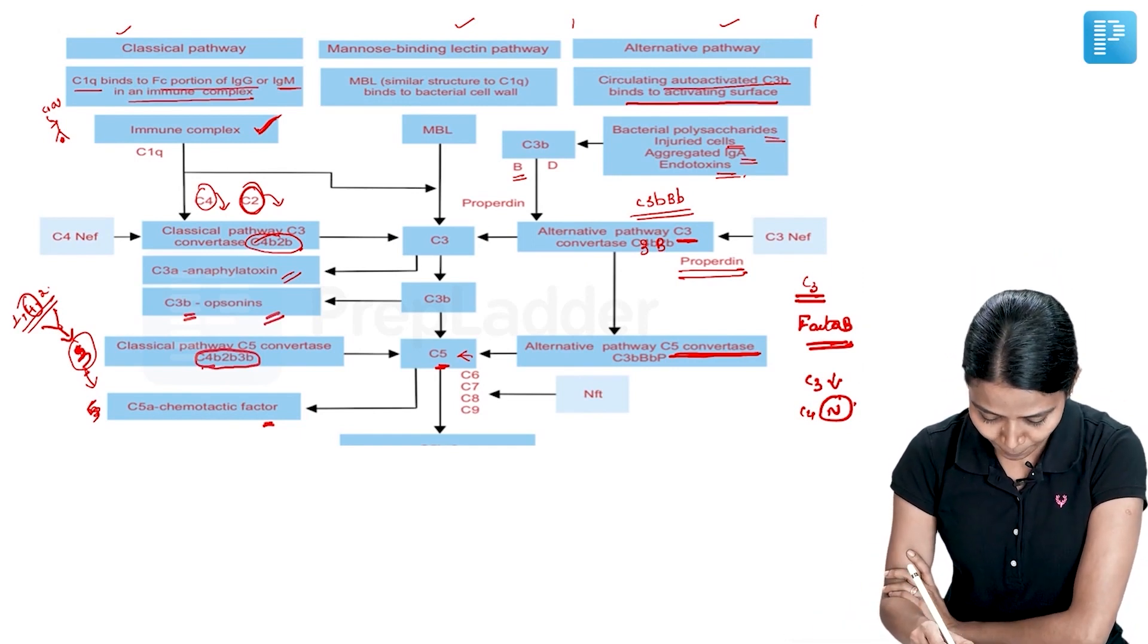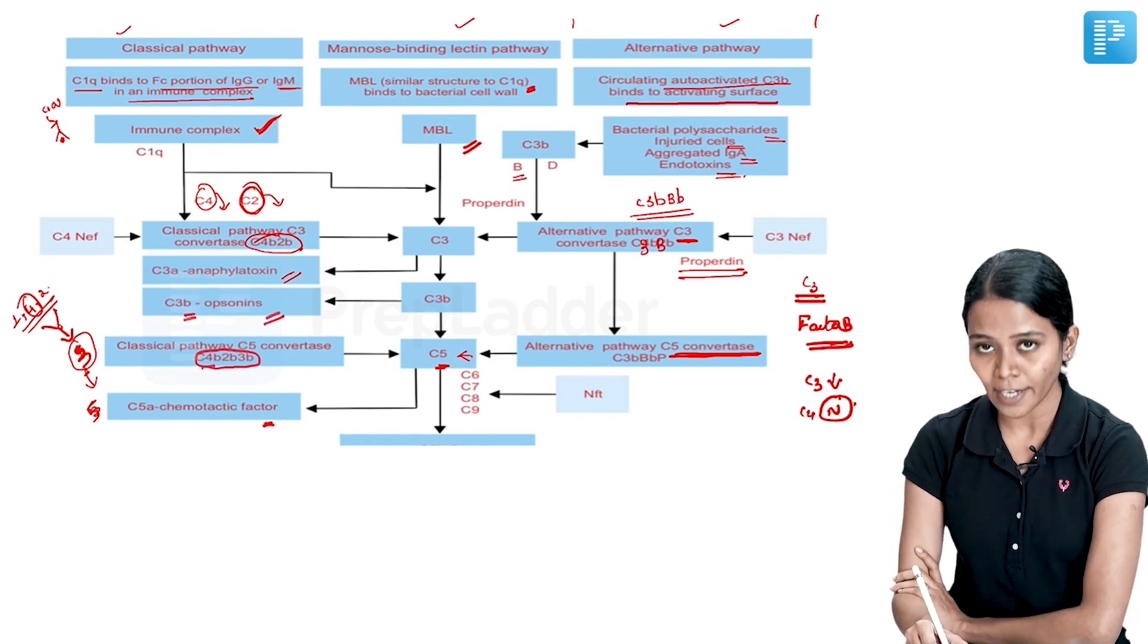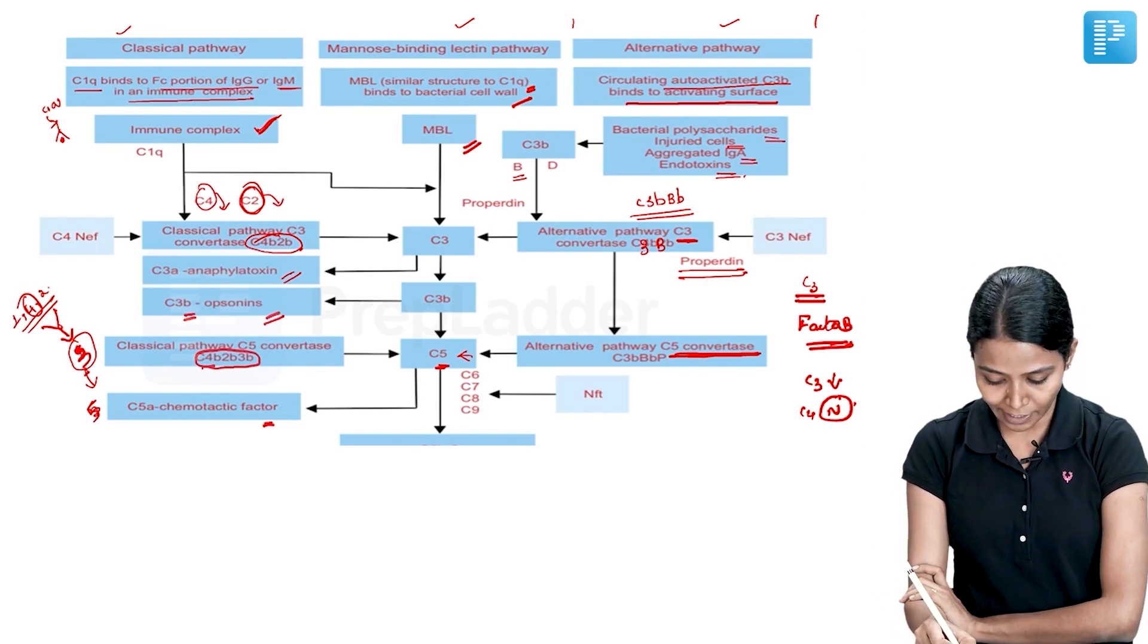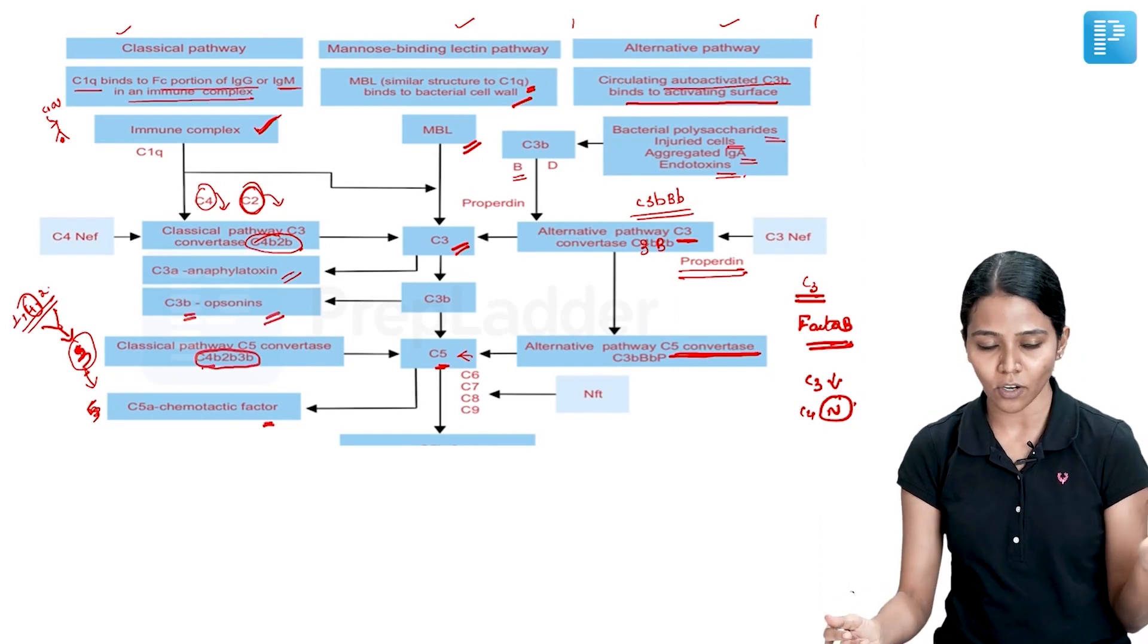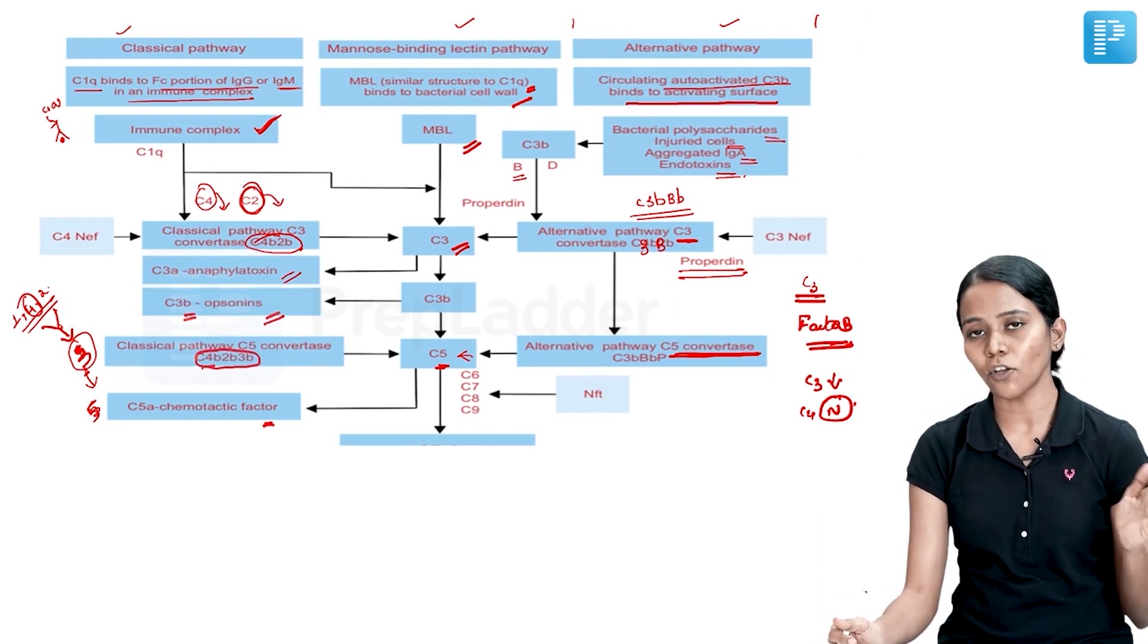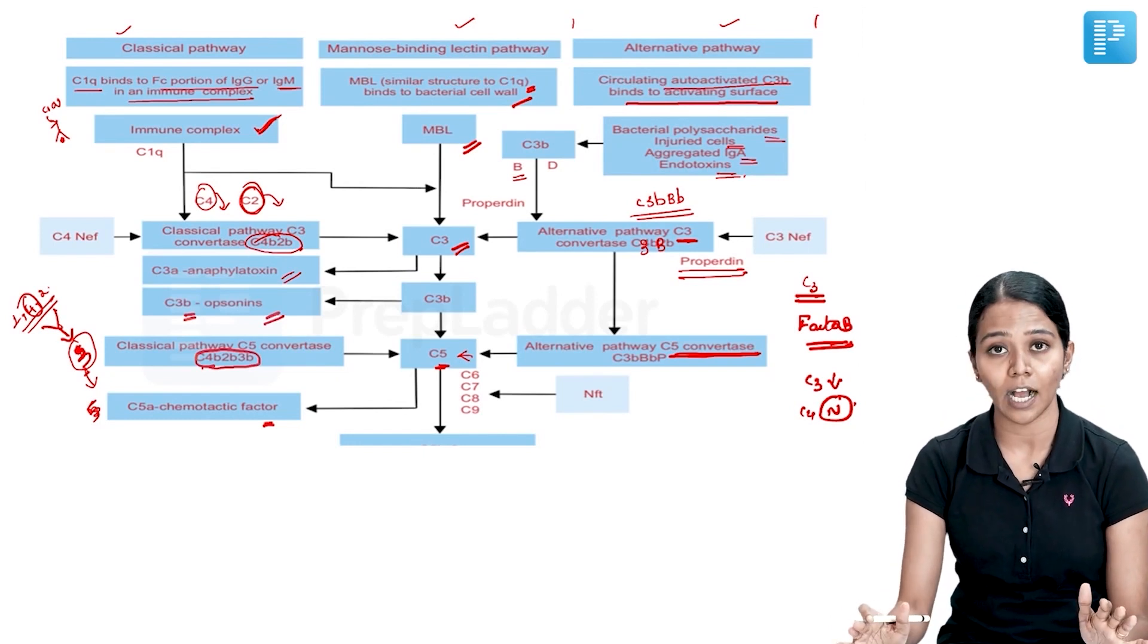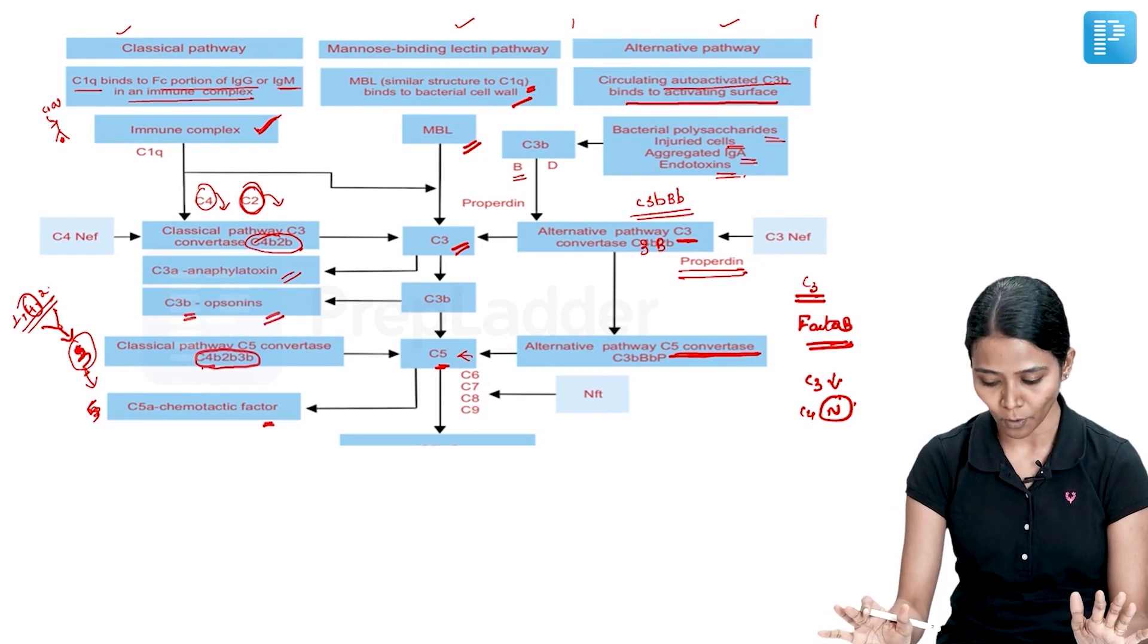So then there is MBL pathway, that is MBL. It has similar structure to C1Q and it binds to the bacterial cell wall. This also goes and directly activates the C3, then the saga continues. It does not require C1 or 4 or 2, it directly can go and activate C3. So these 3 are the pathways by which complement is stimulated in the body.